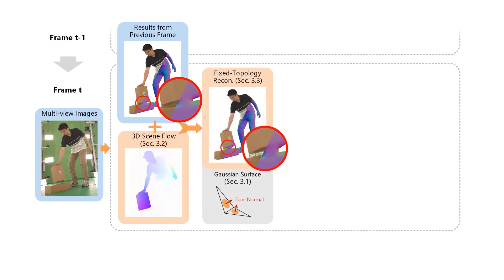Next, we optimize the Gaussian surfaces using the multi-view input for the current frame. In this step, we assume surface topology does not change.